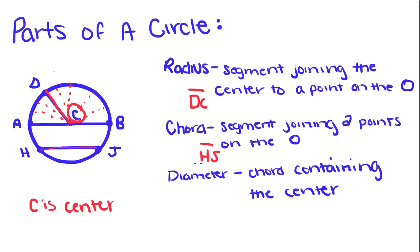And a diameter is a special kind of chord which contains the center of the circle. So this segment right here, it's a chord because it connects two points of the circle, but it's a diameter because in the center of AB is C. So AB is the diameter of our circle.